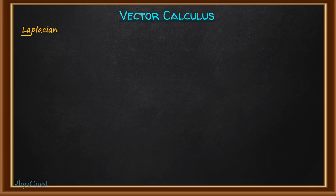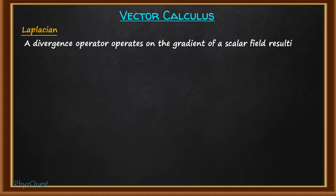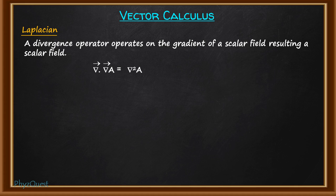The last one is the Laplacian. The concept of Laplacian involves double differentiation. When a divergence operator operates on the gradient of a scalar field, this results in a scalar field, and this operation is known as the Laplacian. Mathematically, it acts as the divergence of the gradient of a scalar field: del · (del A) = del² A, where A is a scalar field. The final expression is ∂²A/∂x² + ∂²A/∂y² + ∂²A/∂z², which is also a scalar quantity.